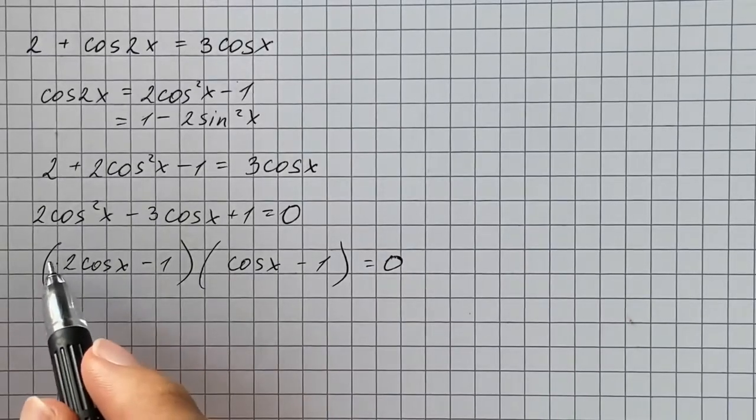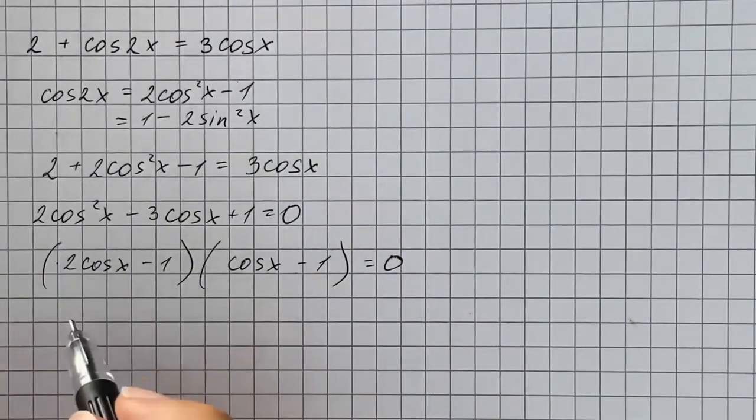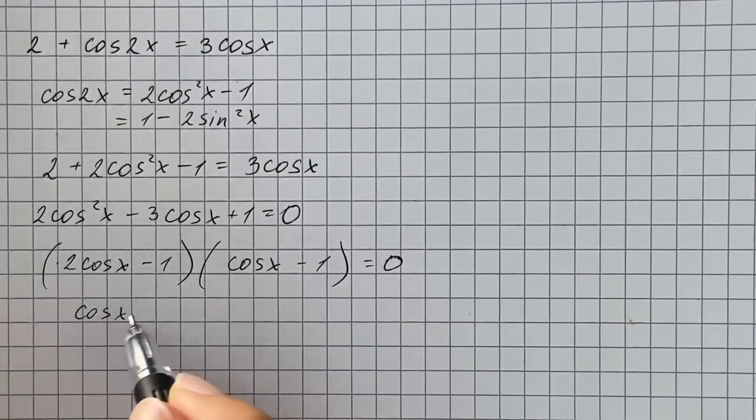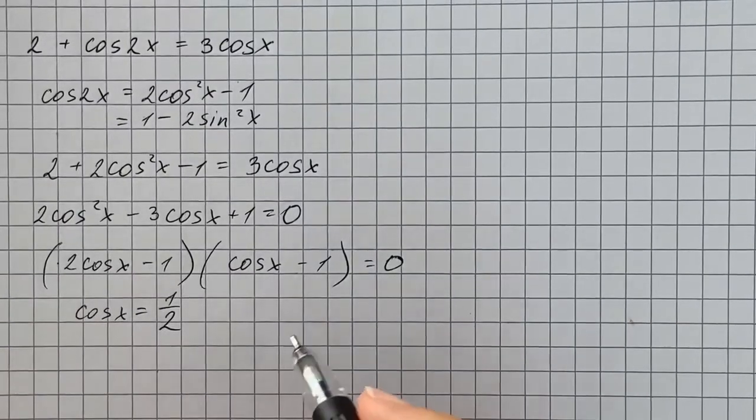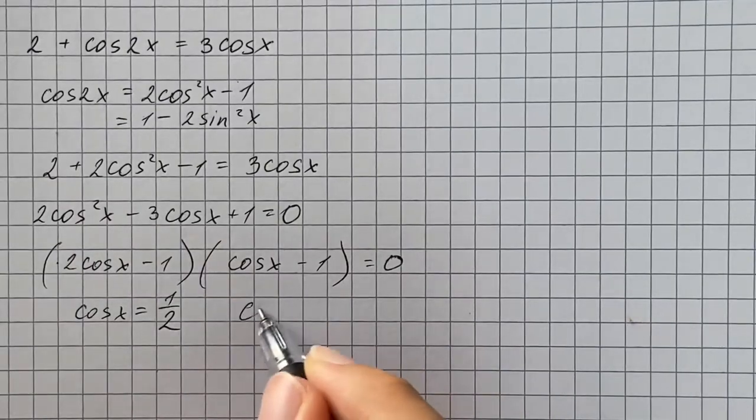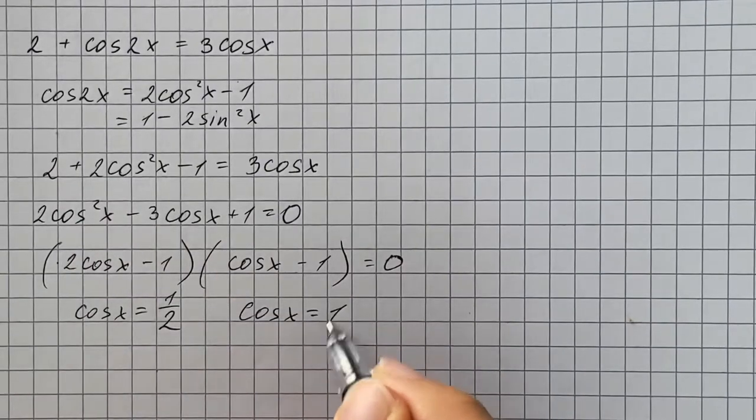So we set the first factor equal to 0 and get that cosine of x equals 1 half, and from the second factor we get that cosine of x equals 1.